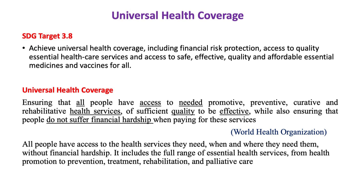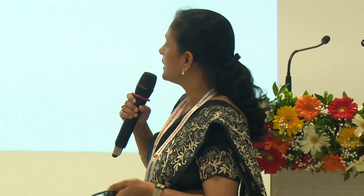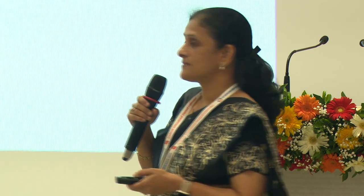The SDG target 3.8 talks about universal health coverage including financial risk protection. Universal health coverage means that all people should have access to needed health services — preventive, promotive, curative or rehabilitative — in such a manner that it should be quality service, and there should not be any financial hardships. These are very important things when you look at the definition of universal health coverage.